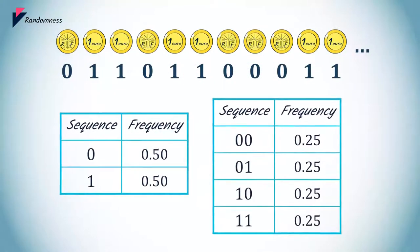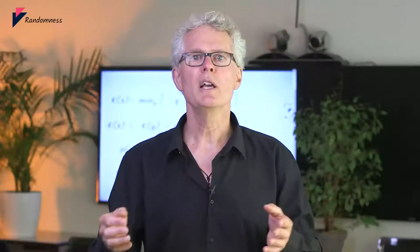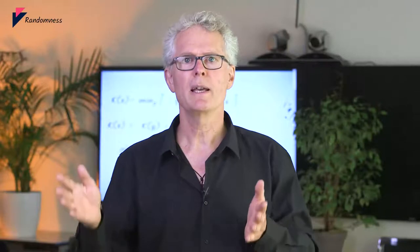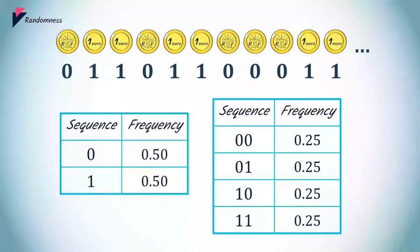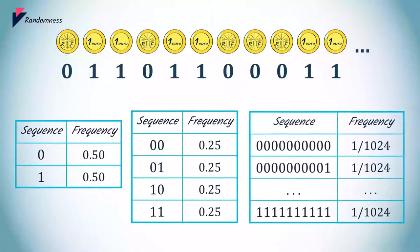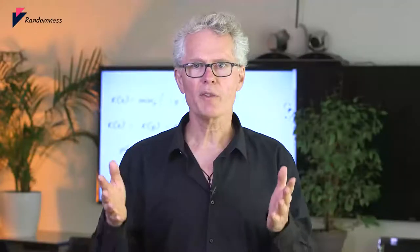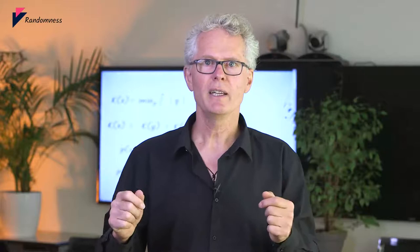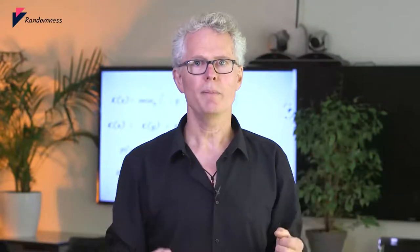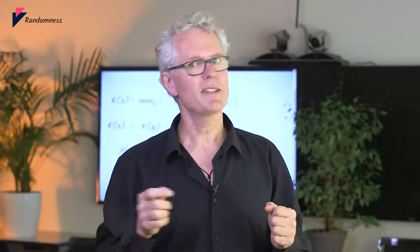25% of zero-zeros, 25% of zero-ones, 25% of one-zeros, 25% of one-ones, and so on. Even 10 zeros in a row should occur regularly, once every 1024 times. We could check all these frequencies, and if the series passes all the tests, it may be declared truly random. Unfortunately, this is not sufficient.